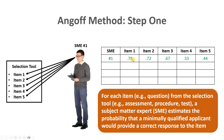A probability reflects how likely something is to occur. A probability of 1 means it's essentially a certainty that a minimally qualified applicant would answer correctly, while a probability of 0 means essentially no chance of a correct answer. A probability of 0.50 indicates a coin flip — a 50-50 chance of answering correctly.